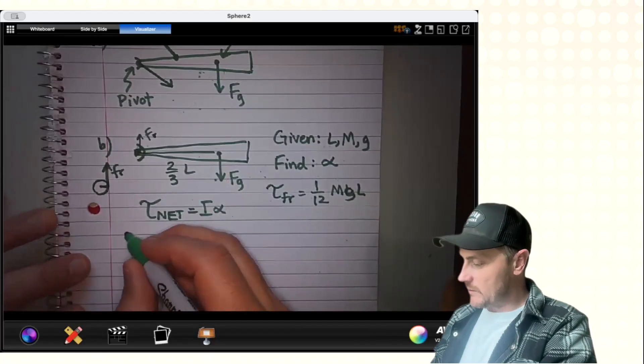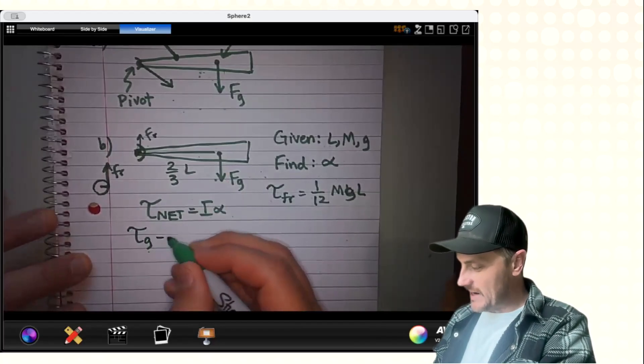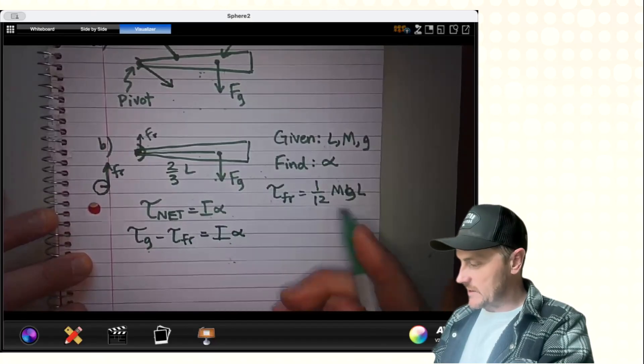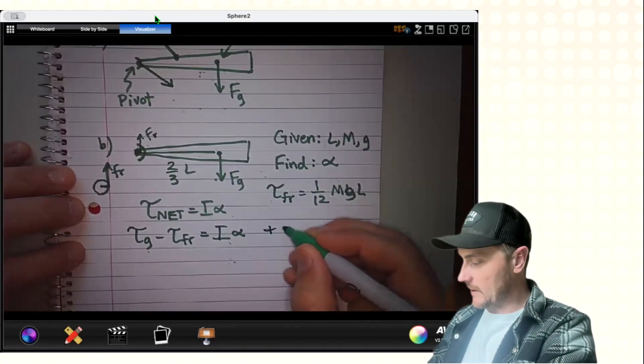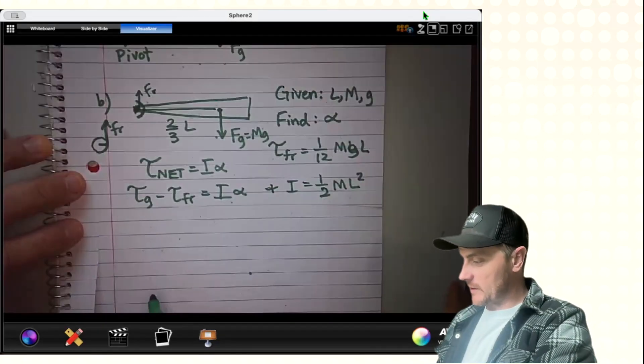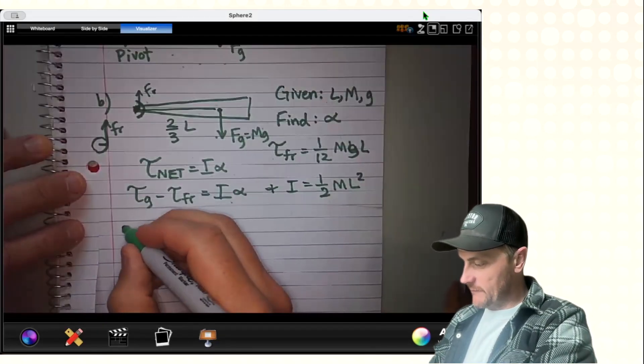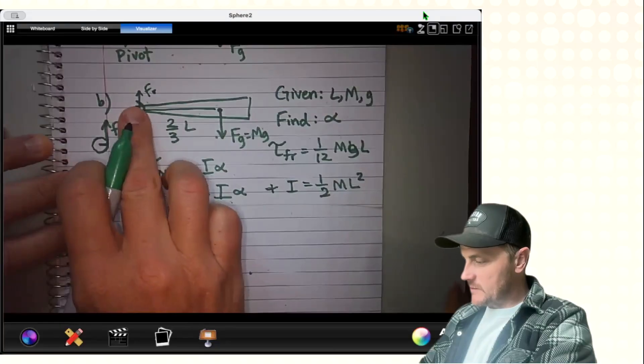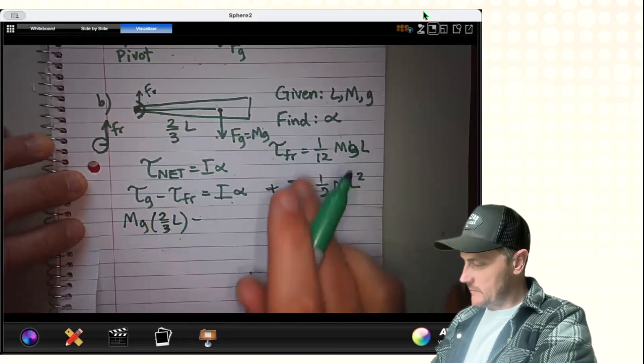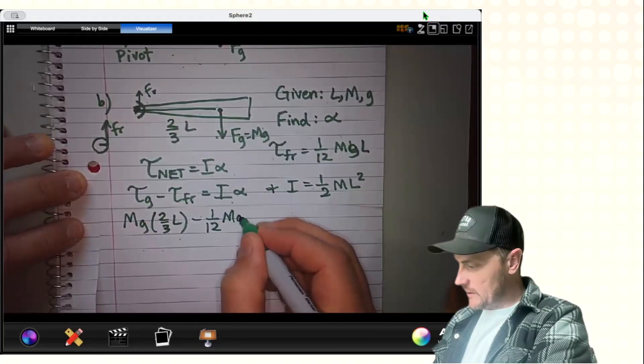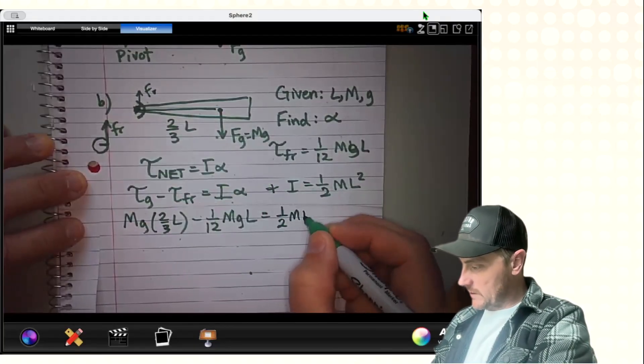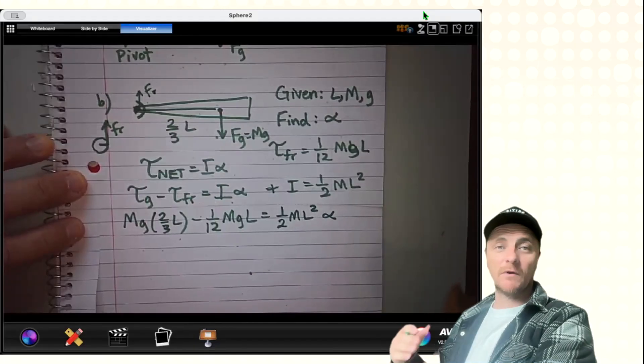So torque net would be my torque of gravity minus my torque of friction equal to I times alpha. And don't forget, I is equal to one-half ML squared. All right, from here, I'm going to plug in my torque of gravity, and that would be my force of gravity times the lever arm, two-thirds L, minus my torque of friction, one-twelfth MGL, equals my rotational inertia, one-half ML squared, times the thing I'm looking for, alpha.